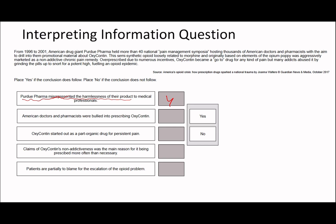Over-prescribed due to numerous incentives, OxyContin became a go-to drug for any kind of pain but many addicts abused it by grinding the pills up to snort for a potent high. If the addicts abused it, then it must have been an addictive substance and it says it was marketed as non-addictive. So this must be true. American doctors and pharmacists were bullied into prescribing OxyContin. Well, it says over here that it was over-prescribed due to numerous incentives and all it says about the American doctors and pharmacists here is the aim was to drill into them promotional material about OxyContin. They weren't actually forced into doing it. There's not quite enough inference you can make. This 'bullied' is a bit too far. OxyContin started out as a part organic drug for persistent pain. It says it was based on elements of the opium poppy, it's obviously organic. And for persistent pain, it says marketed as a non-chronic pain remedy. So I would say this is true.